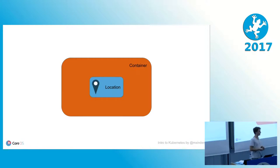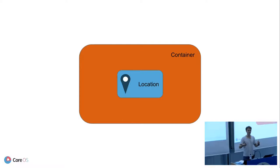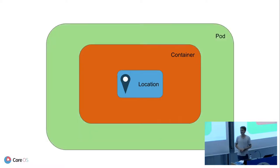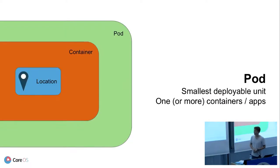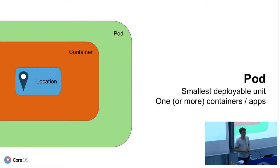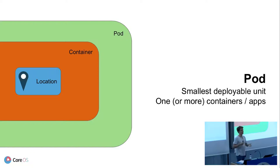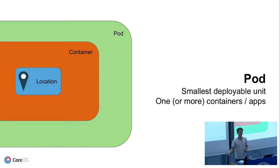Kubernetes doesn't stop at containers. It wraps another concept around the application: a pod. A pod is the smallest deployable unit in Kubernetes. The idea is that sometimes you don't only want one process — for example, with our location server, we might put a network proxy or logging framework in front of it, something that has to be deployed with that container every single time. So we put it all together in one pod, and then we can schedule that pod somewhere.